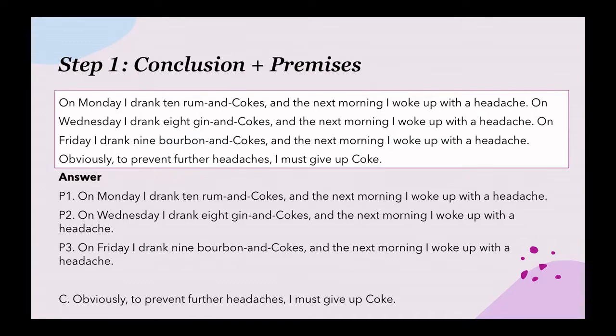But to make the conclusion from the premises, there is one implied premise. Can you guess what it is? To make this conclusion from the premises, there is one missing premise. The missing premise is: drinking coke may cause headaches. And obviously, to prevent further headaches, I must give up coke.